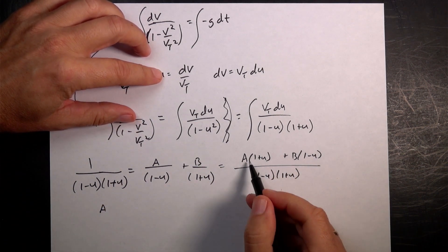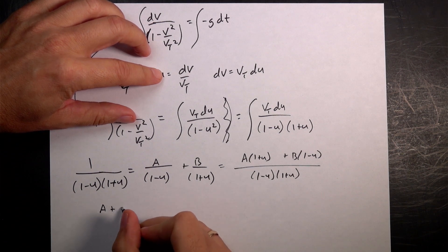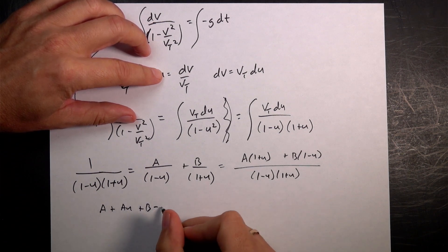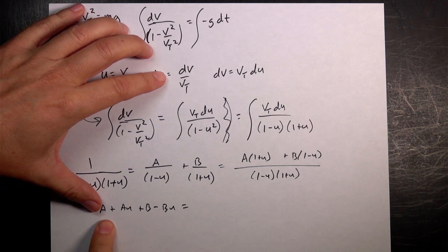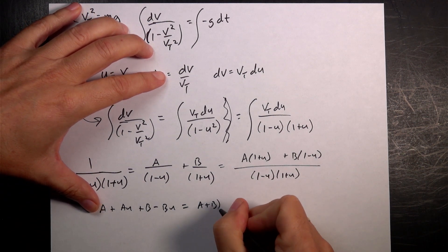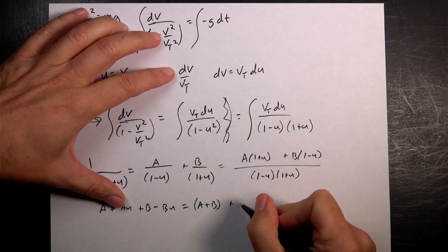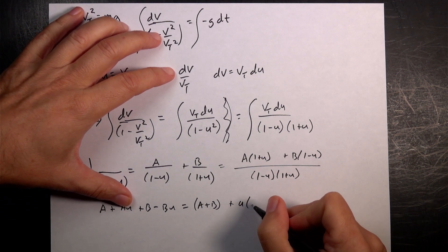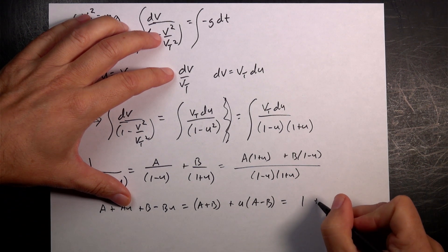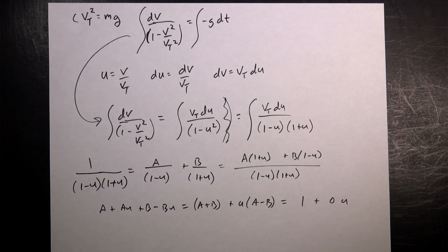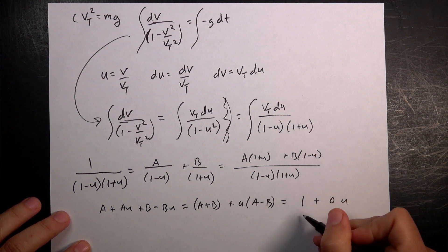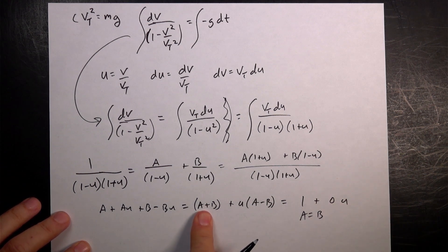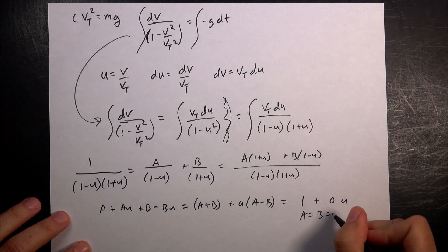So I get a times 1 plus u plus b times 1 minus u. And then they'll have a common denominator of 1 minus u times 1 plus u. So we're undoing what we just did. But if we want that to work, then this stuff up here has to equal to 1. So this up here has to equal 1. So I can say, I'm going to multiply this out. a plus au plus b minus bu equals 1. Now I'm going to gather the constant terms and the non-constant, I mean the u terms and the non-u terms. So here I have a plus b plus u times a minus b equals 1 plus 0u. So that means that this term has to be 1, this term has to be 0. So if this term is 0, then a has to be equal to b. a equals b. And if this term is 1 and a is equal to b, then a and b are equal to 1 half.